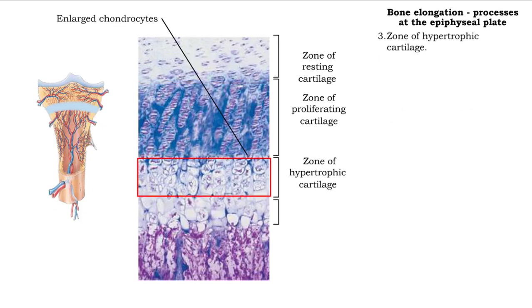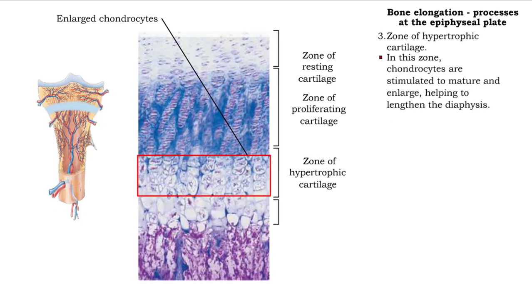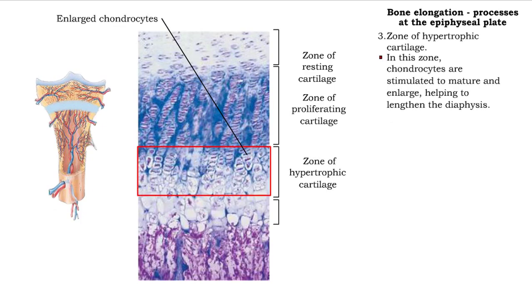In the zone of hypertrophic cartilage, chondrocytes mature and enlarge. This maturation also helps to expand lacunae and lengthen the diaphysis.